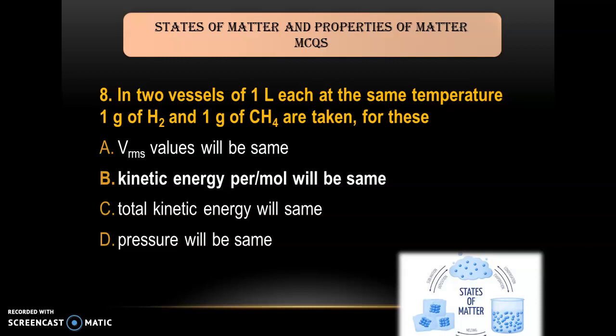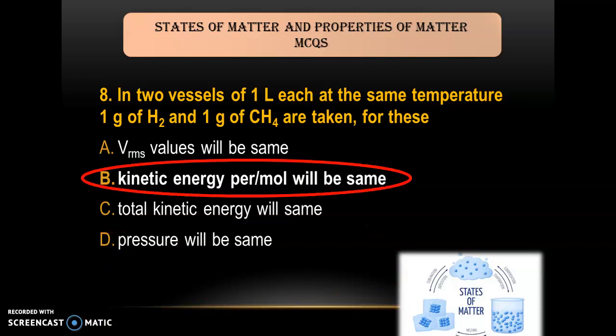Question 8: In two vessels of 1 liter each at the same temperature, 1 gram of CH₂ and 1 gram of CH₄ are taken. Which property will remain the same — A) Vrms value; B) kinetic energy per mole; C) total kinetic energy; D) pressure. The answer is B — kinetic energy per mole will remain the same.